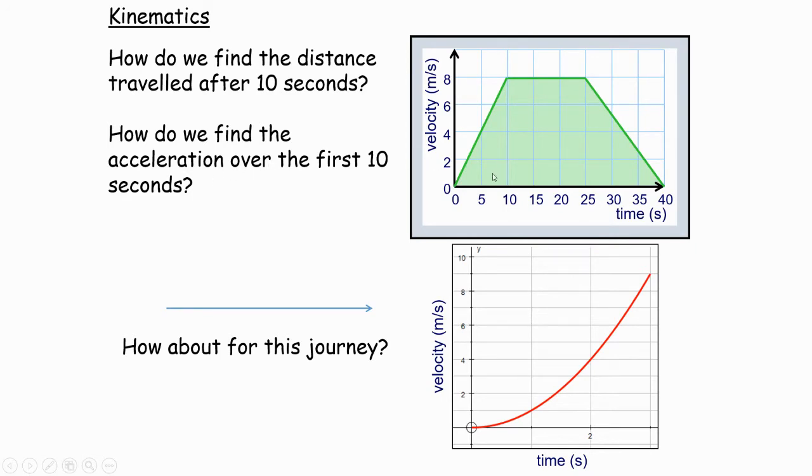How do you find the acceleration? Well, that's going to be the gradient of the line. Change in y by change in x. And that's going to be, well, it's changed from 0 to 8, so the change in y is 8. The change in x is 10. So, 8 over 10, 0.8.